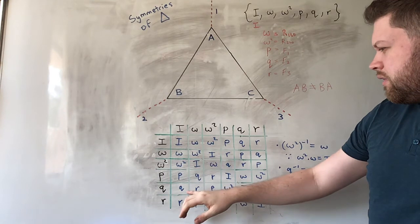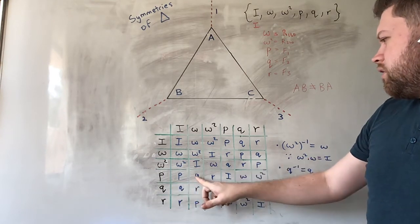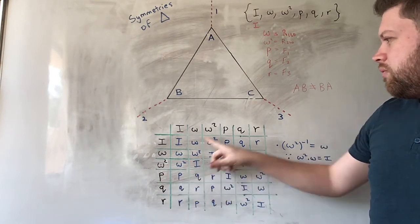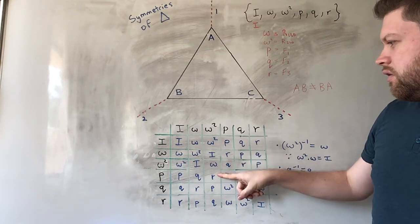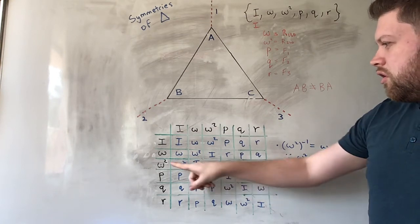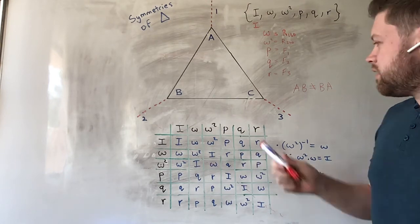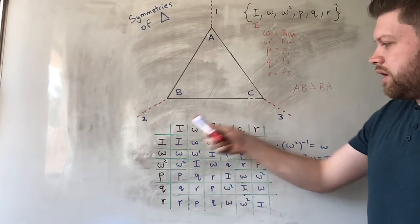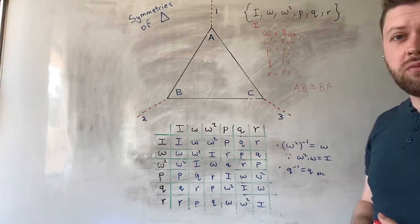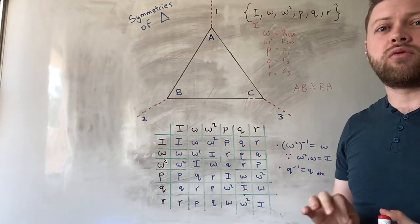So for example, let's see, P omega squared is R, but omega squared P is Q. So in this case, this whole group here, this whole group is not commutative. So, it's not an abelian group.